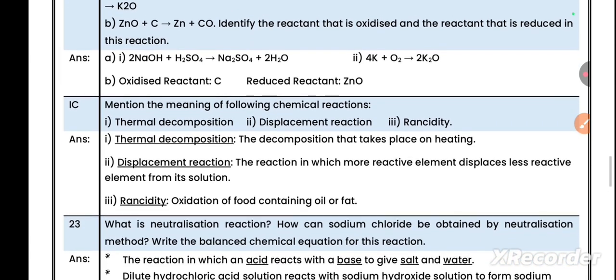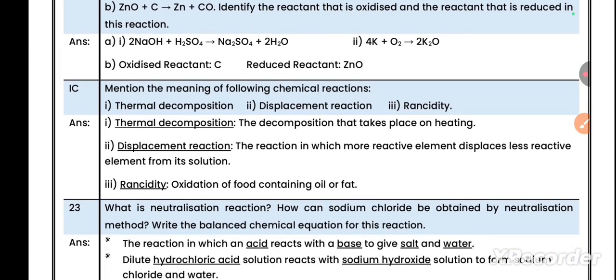For this question, mention the meaning of the following chemical reactions. Thermal decomposition: decomposition that takes place on heating. Displacement reaction: the reaction in which more reactive element displaces the less reactive element from its solution. Rancidity: oxidation of food containing oil and fat.